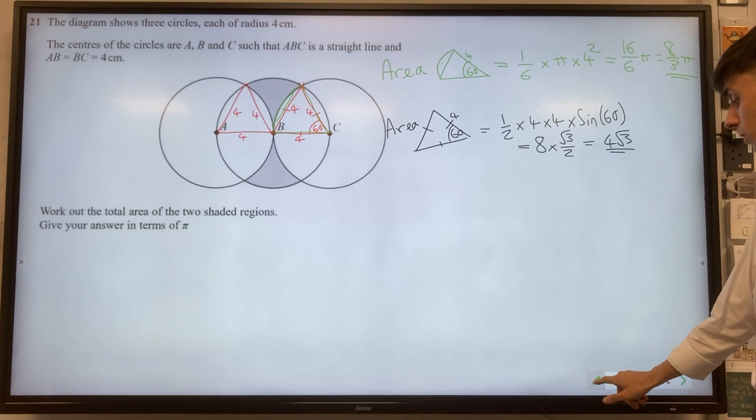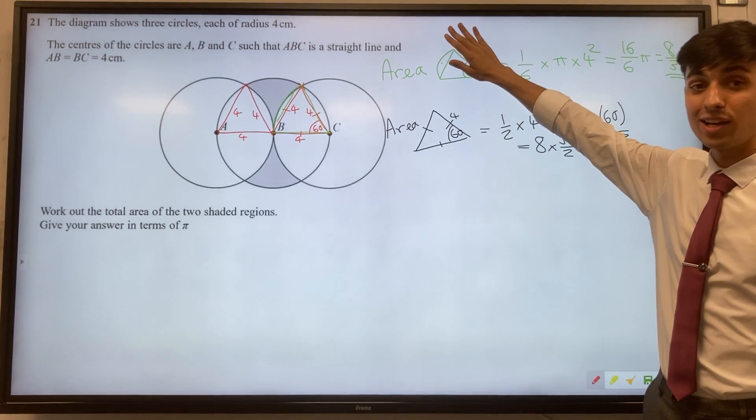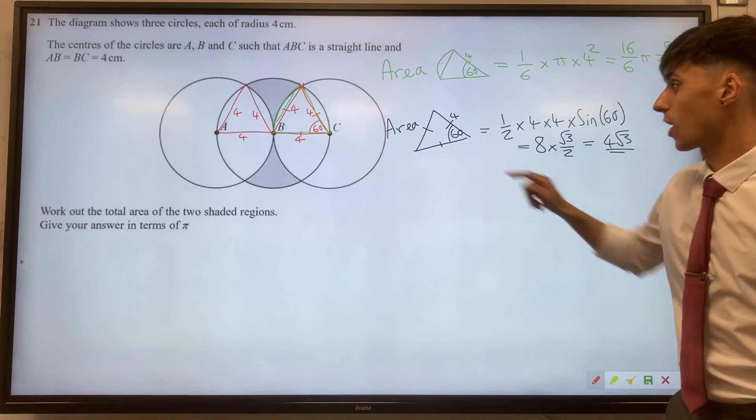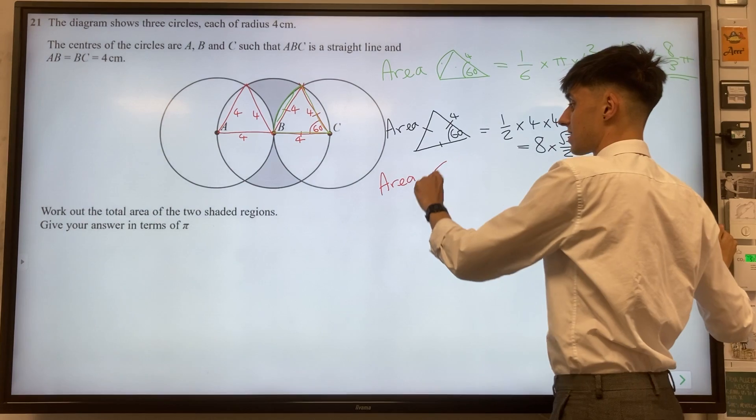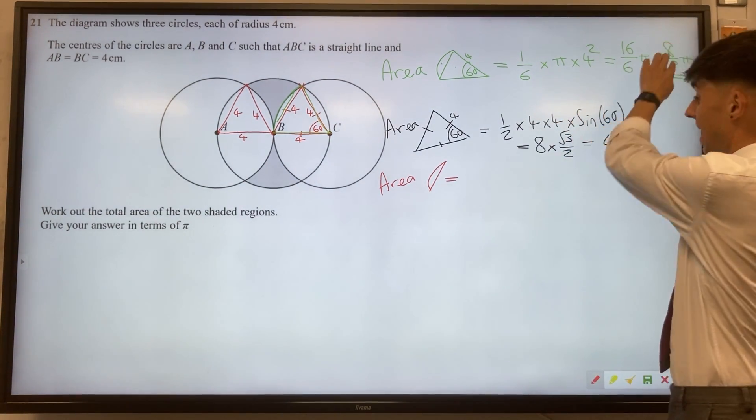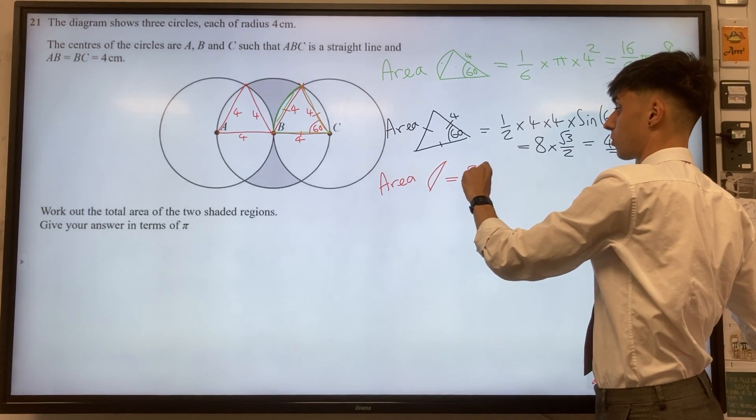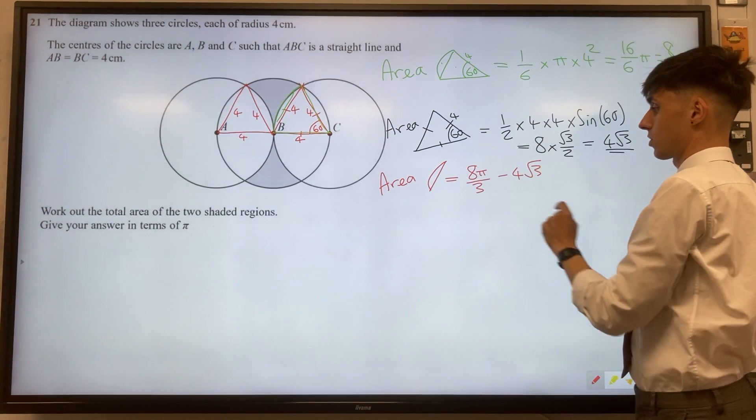Using this, we have the whole pizza slice take away the triangle, leaving us with just the pizza crust segment. That would be 8π/3 - 4√3.